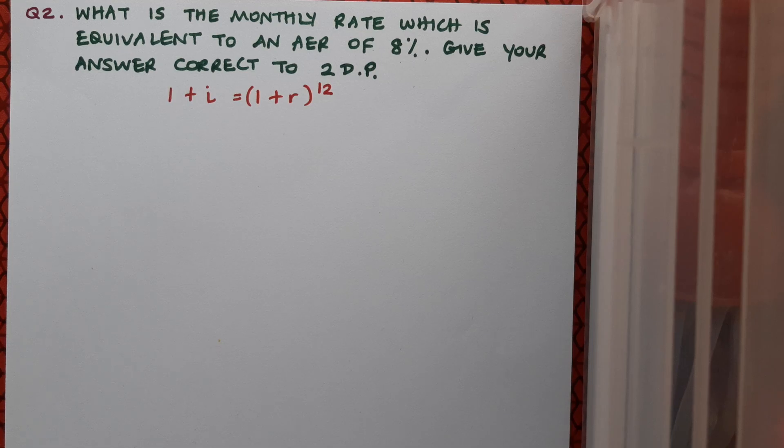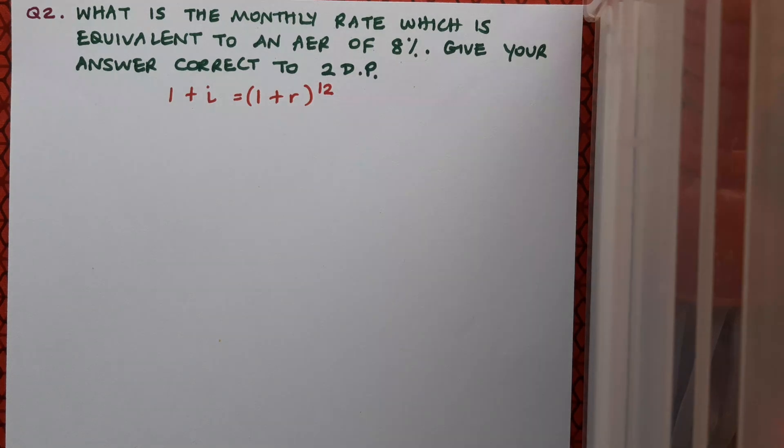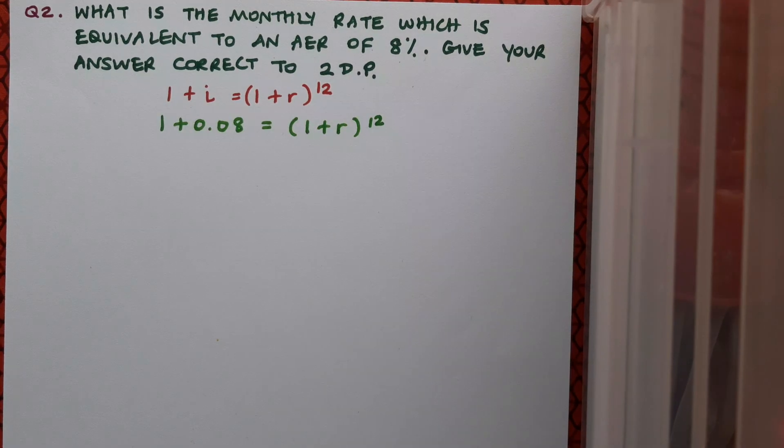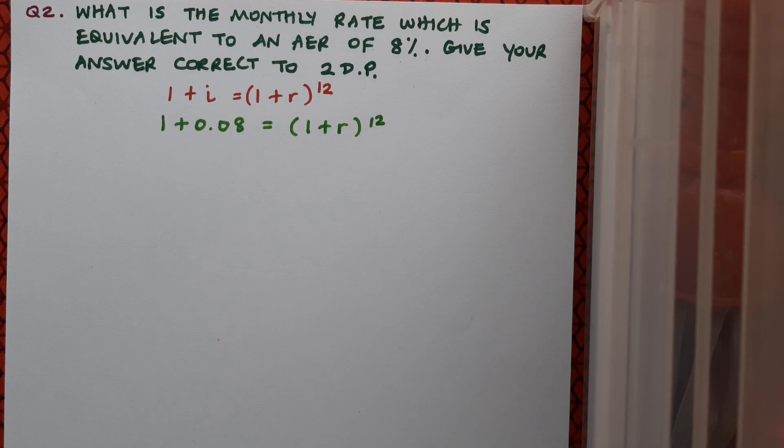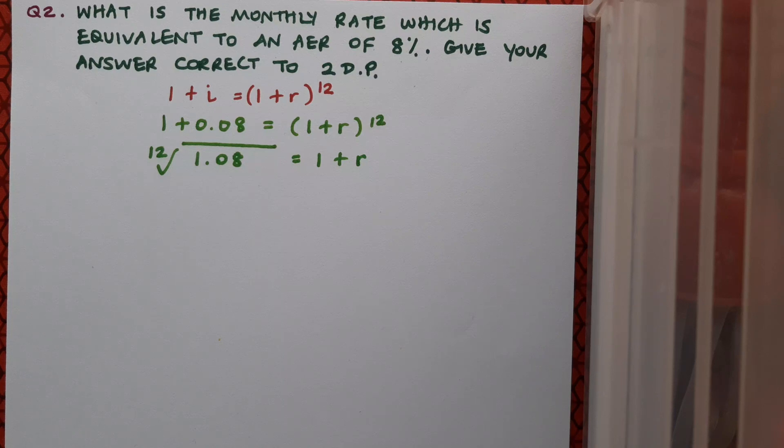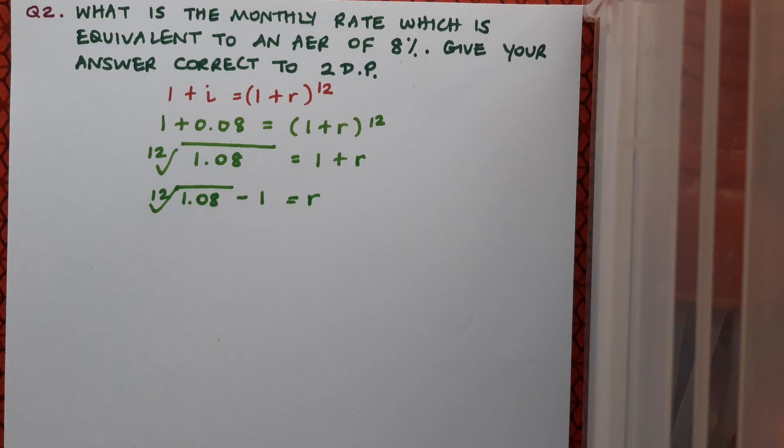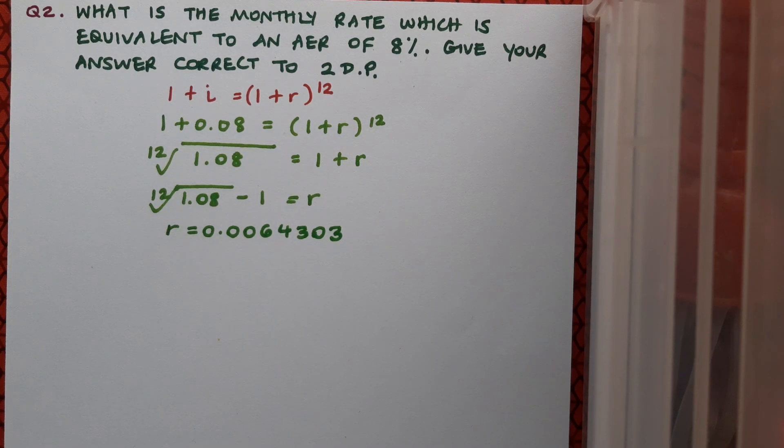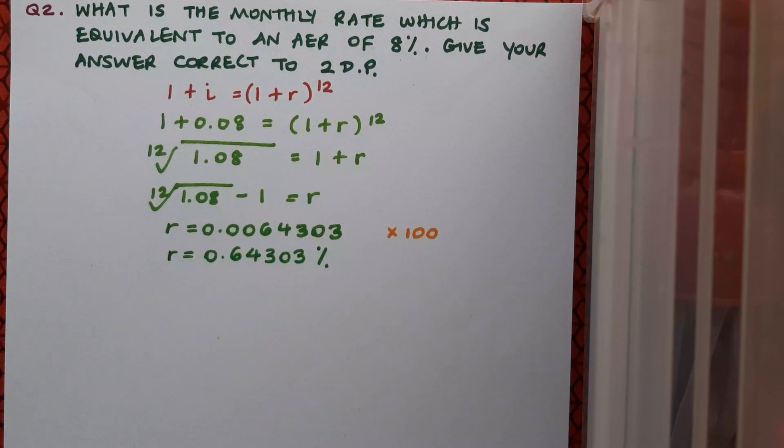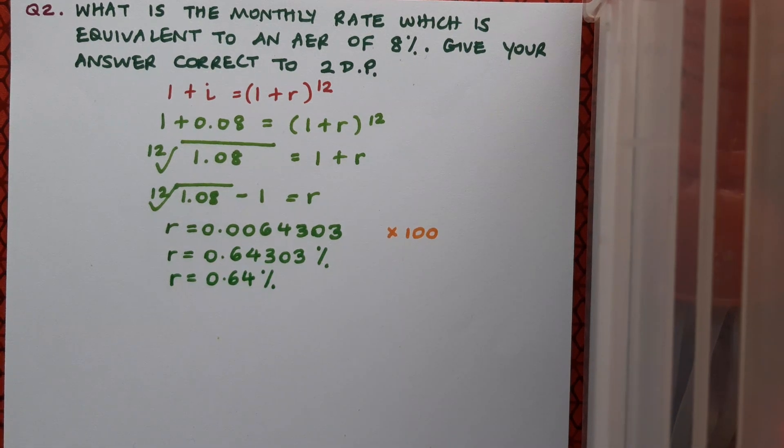So first of all I'm making a note of my formula. Don't forget the i represents the AER and the r in this case represents the monthly rate. Remembering to change my 8% to a decimal I can say that 1 plus 0.08 equals 1 plus r to the power of 12. The 12th root of 1.08 equals 1 plus r, and if you want to write the next line all in one calculation we can say the 12th root of 1.08 minus 1 equals r and then we can stick all of that in one go into the calculator. So r is coming out as 0.0064303. Don't forget I have to change this back into a percentage. I'll do so by times and by 100 giving me 0.64303% and then of course I must remember to round off at the end. So my answer is 0.64%.